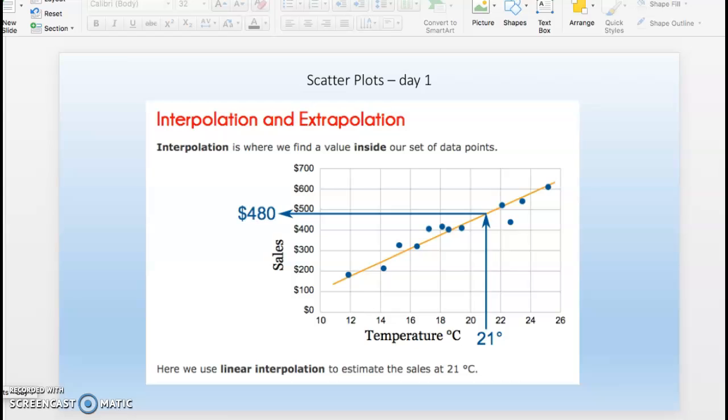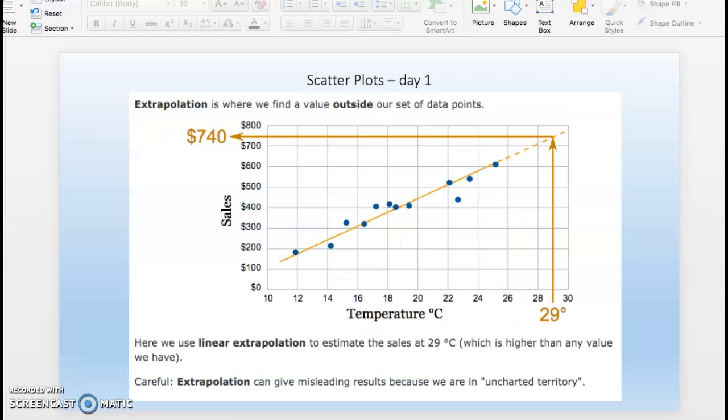We also have extrapolation, where you find a value that's outside the set of data that you have. You draw the line of best fit and then just keep drawing it up as if the relationship stayed exactly the same. In this case, we're estimating at 29 degrees we'd sell $740 worth of ice cream. Be careful: sometimes extrapolation can lead to misleading results because things rarely just stay doing exactly the same thing forever.